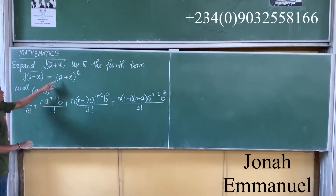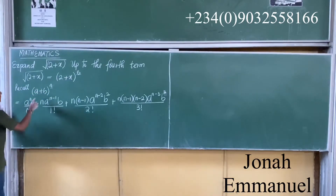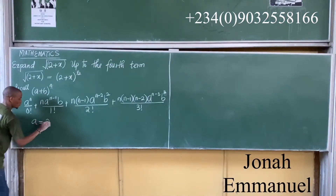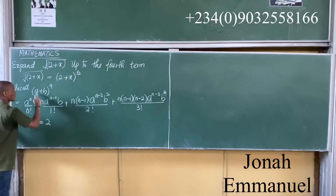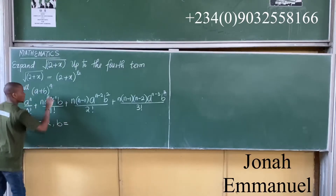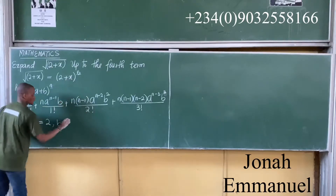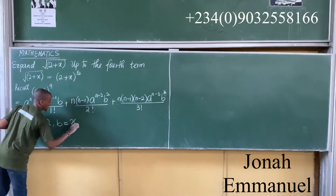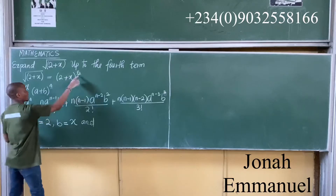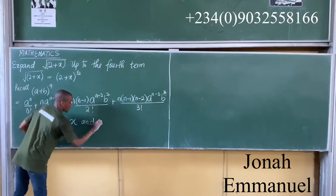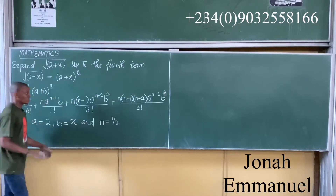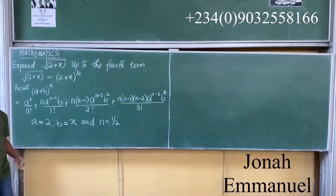Comparing this formula with our expression, it means that a is equal to 2, b is equal to x, and n is equal to 1 over 2.